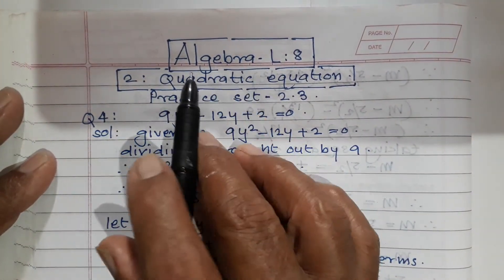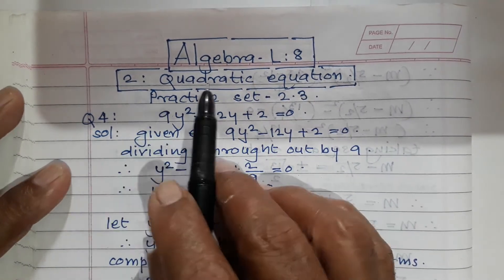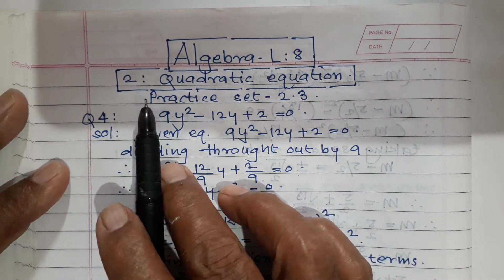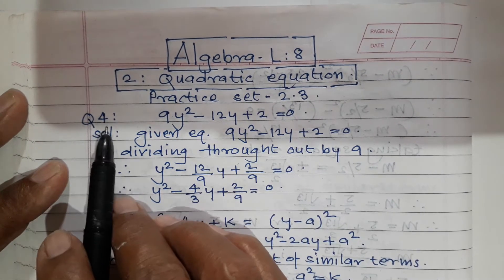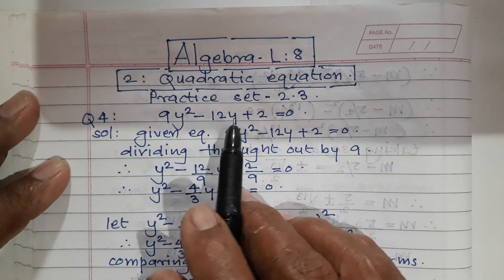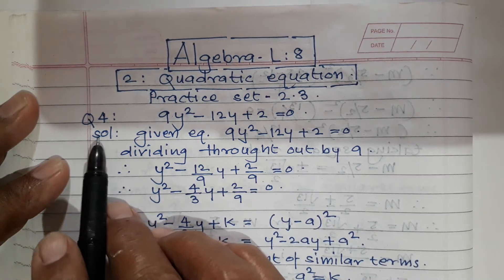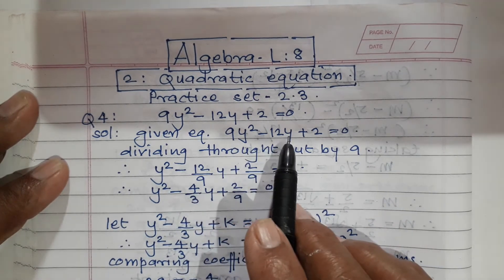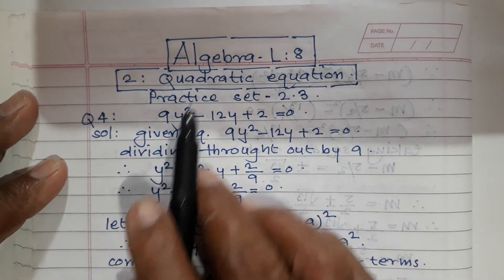Hello my dear students. Algebra lecture number 8, chapter number 2: quadratic equations. In this lecture I am going to explain practice set 2.3, question number 4: 9y² minus 12y plus 2 is equal to 0. Solution — given equation: 9y² minus 12y plus 2 is equal to 0.